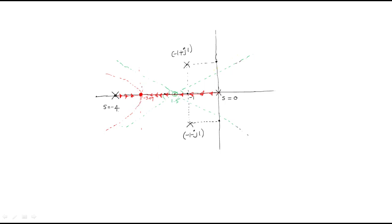The root locus diagram shows the locus flowing from the real axis poles and following the asymptotic directions. The locus branches travel along these paths as the gain k increases from zero to infinity.